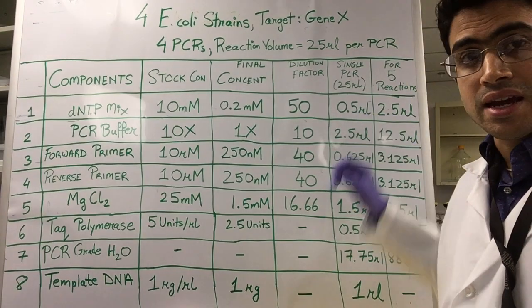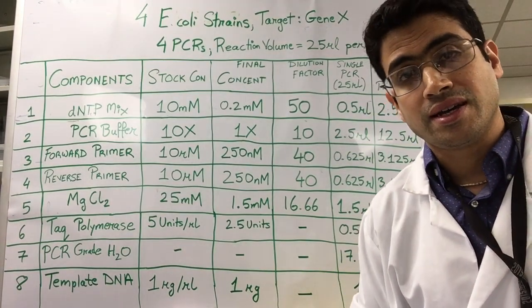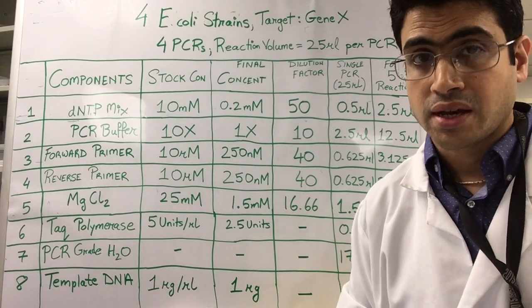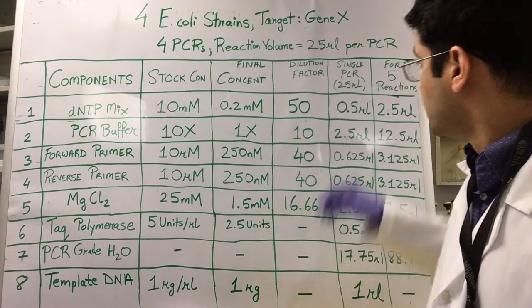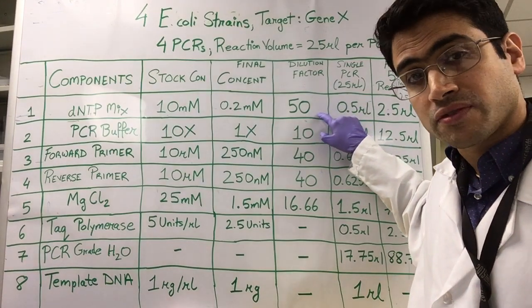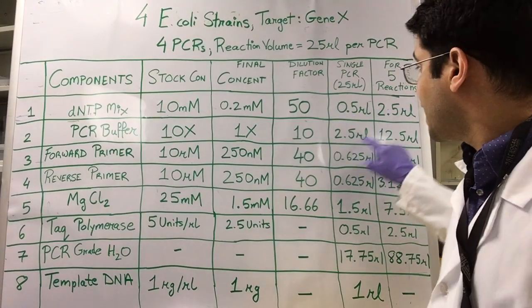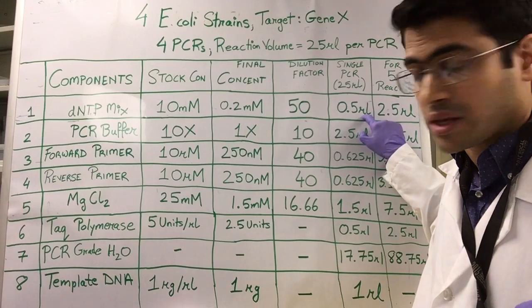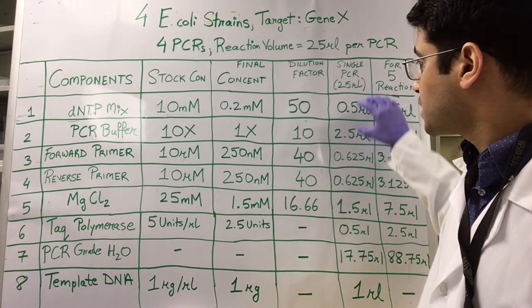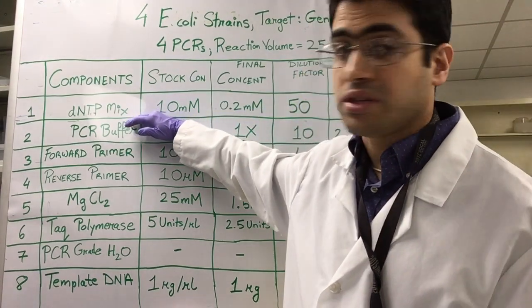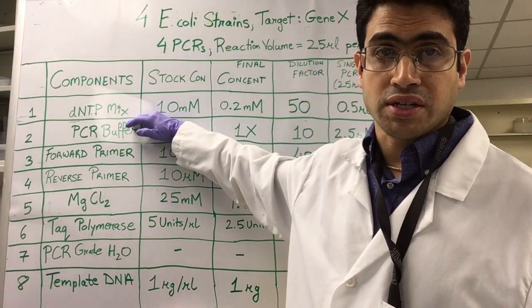We know here that every individual PCR is going to have a final reaction volume of 25 microliters. That's what we decided. So take that 25 microliters divided by the dilution factor of 50 and that gives you your volume of 0.5 microliters.